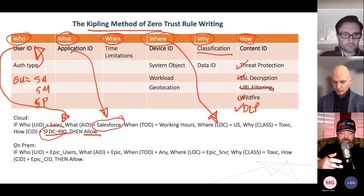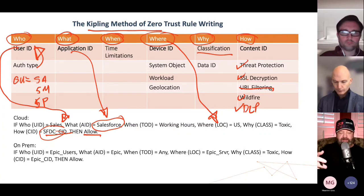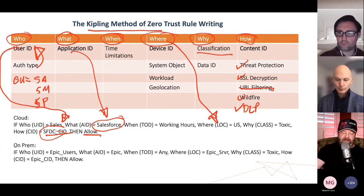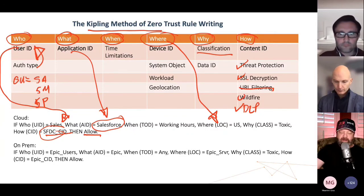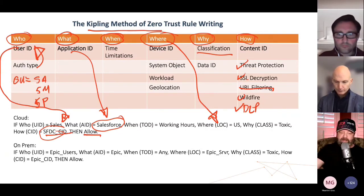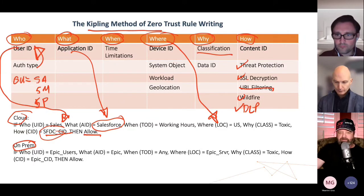Zero Trust is a set of very prescriptive, precise allow rules. We will only allow the good things to happen, and therefore by default we deny the bad things. The way we've always done it in the past — which has failed — is we allowed everything and then played whack-a-mole, trying to add deny rules reactively. No, you have to be very specific: John should have access to this resource at this time, located here, for this reason, and we need to inspect the packet in this particular way. If all those things are true, we allow it. This policy works everywhere — on-premise or in the cloud.